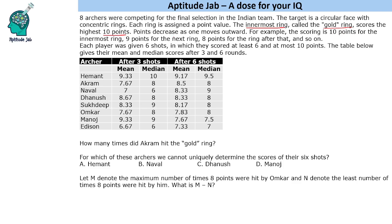scoring 10 points for the innermost ring, 9 points for the next ring, 8 points for the ring after that, and so on. Each player was given 6 shots in which they scored at least 6 and at most 10 points. So the range of scores is 6 to 10 points. The table below gives their mean and median scores after 3 and 6 rounds. We need to answer the questions based on this table.